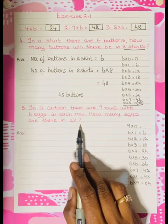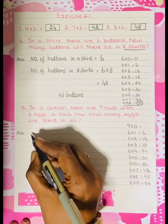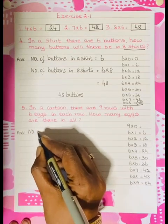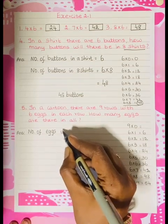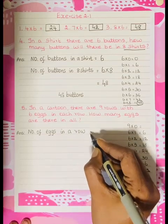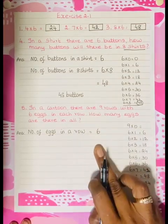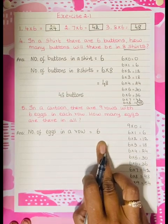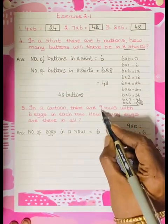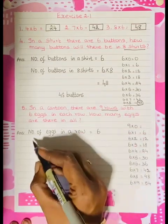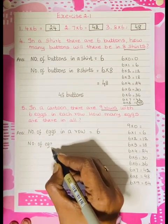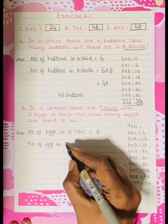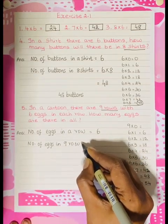So how many eggs are there in all? Number of eggs in a row is equal to 6. Number of eggs in 9 rows.